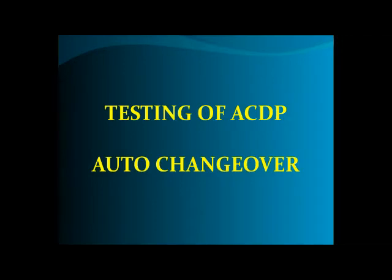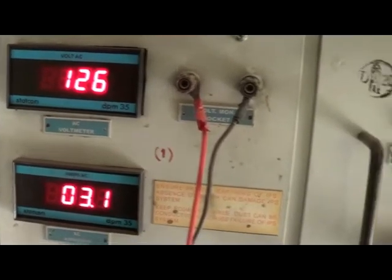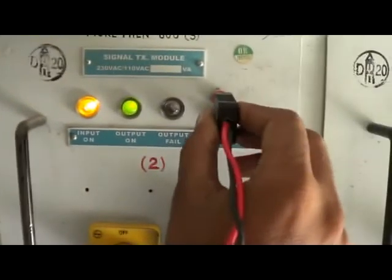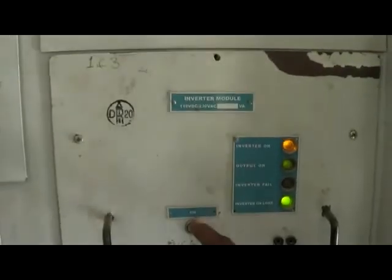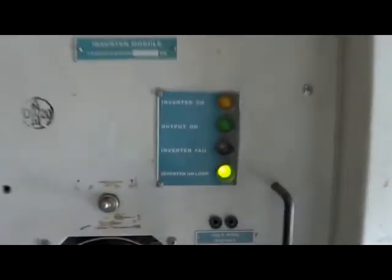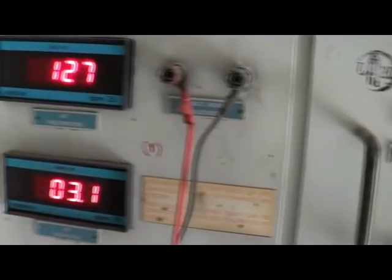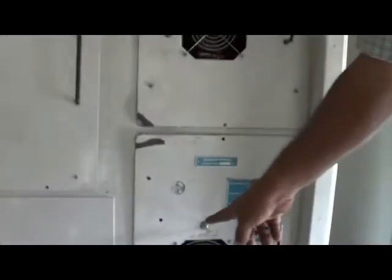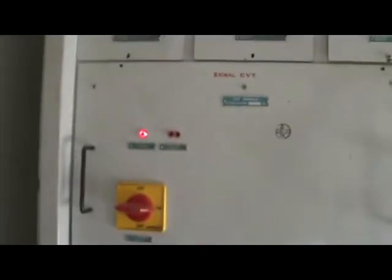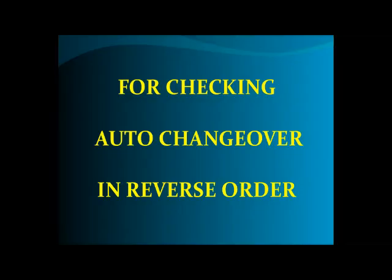Testing of ACDP auto changeover: Connect one of the signal transformer outputs to the digital voltmeter provided. Stop inverter 1 by pressing the stop button and check the load on inverter 2 LED. Check voltage on digital display. Now stop inverter 2; the voltage displayed indicates load on CVT.